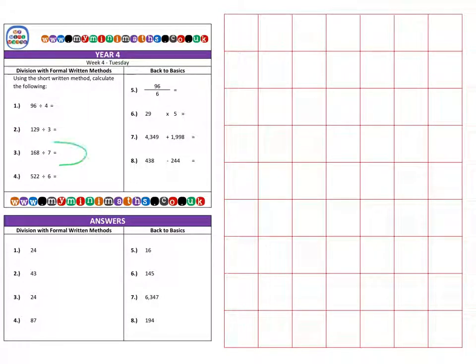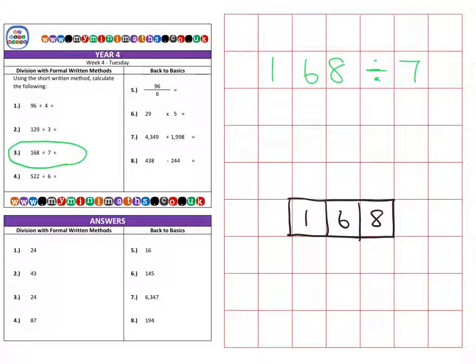Next is question three, which is 168, and we're dividing the 168 by seven. So again, I'm going to take three boxes for my three digits, which is 168, and I'm going to divide this by seven.